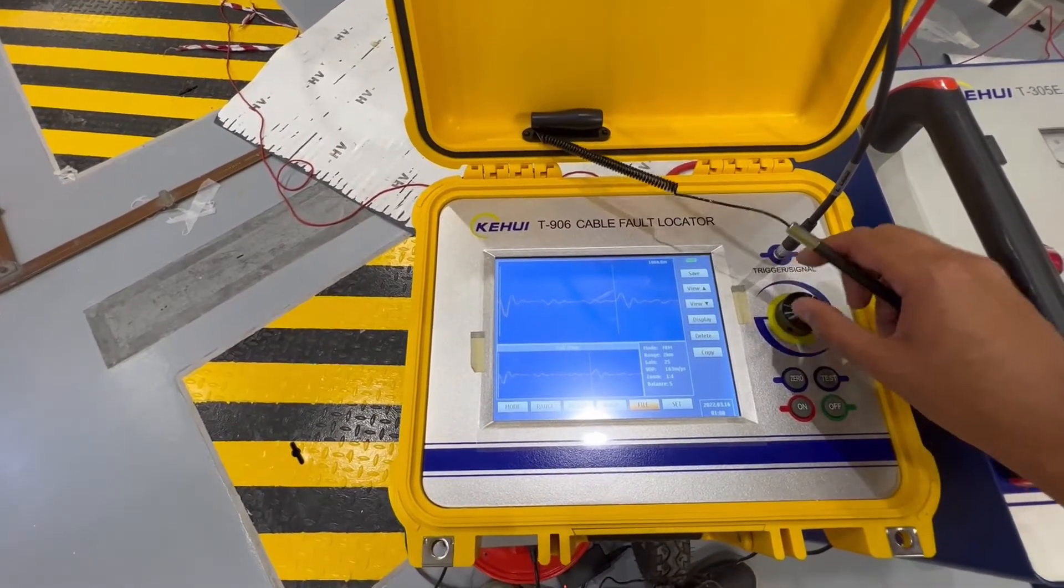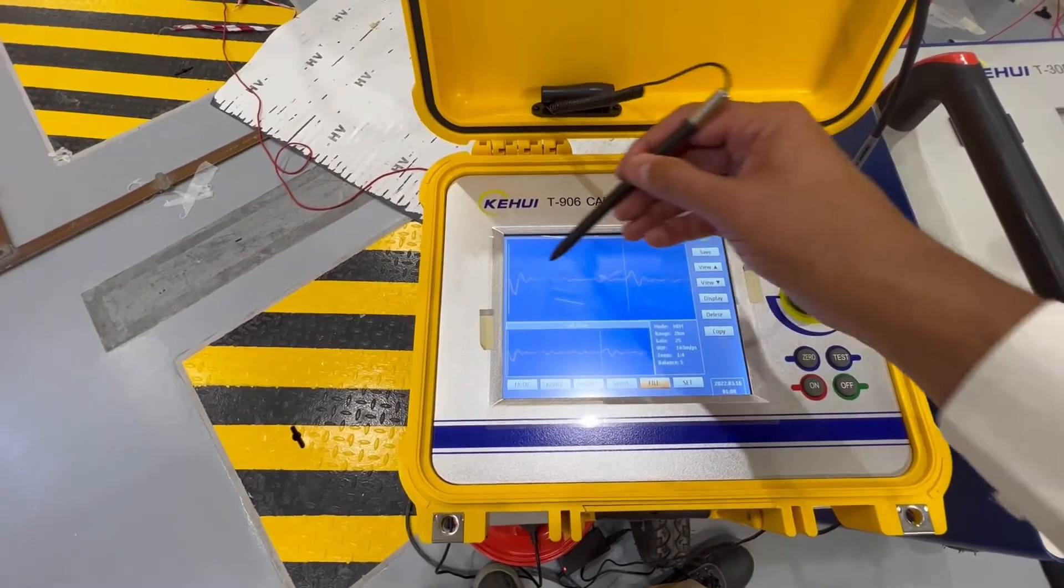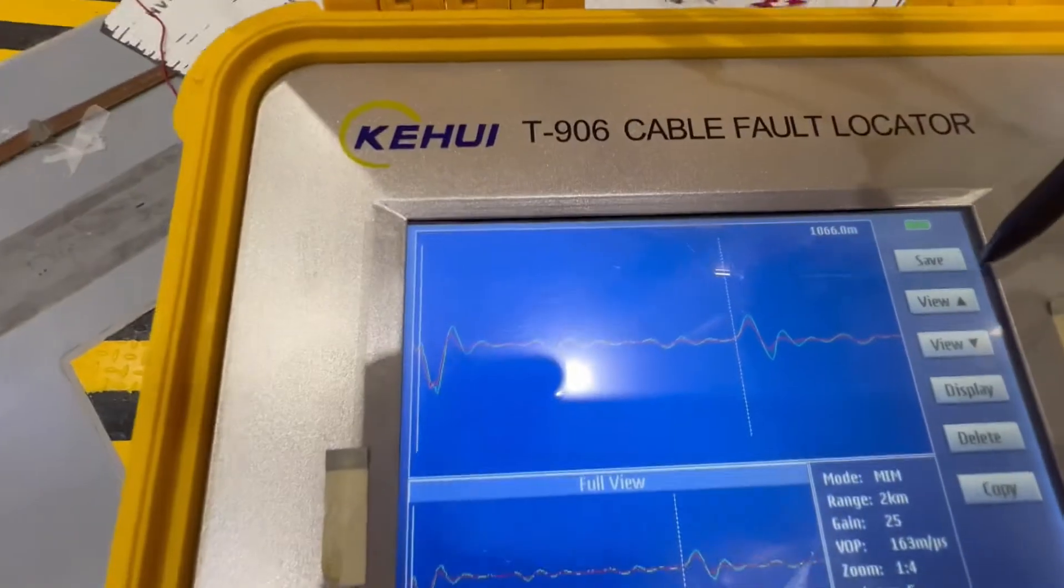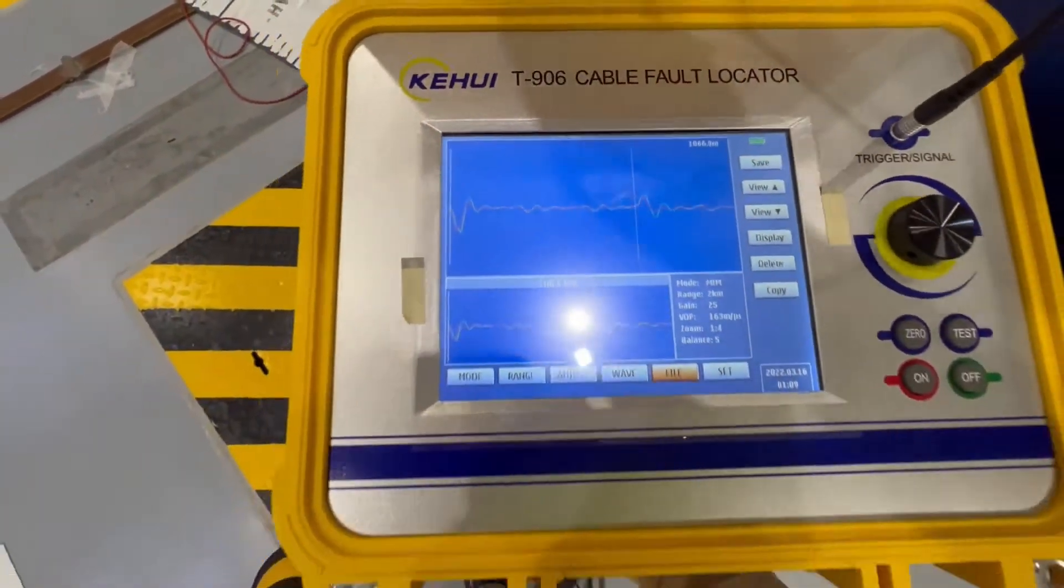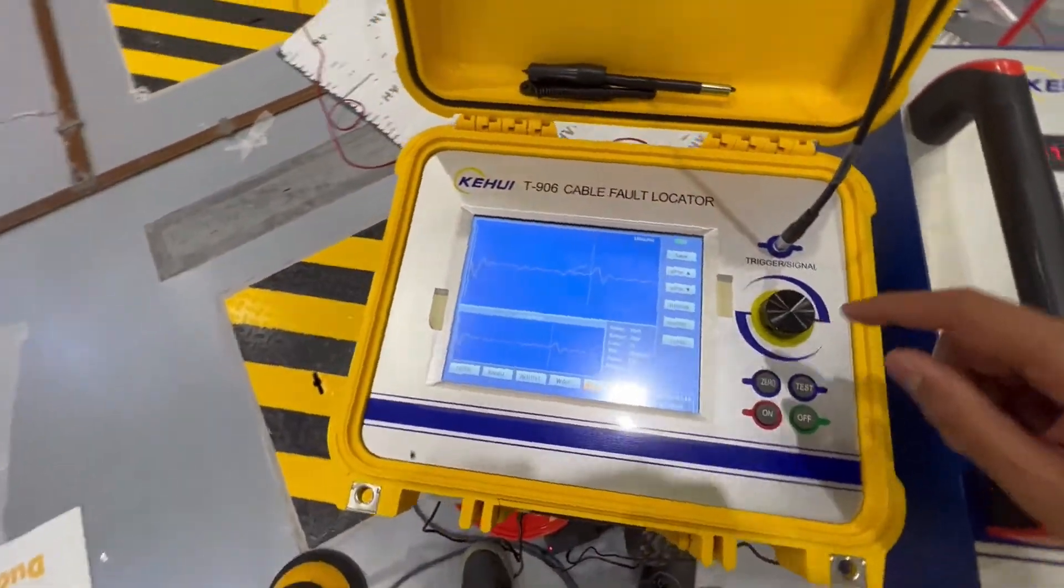You can also compare the graphs. You can see there's a red and green line which helps you to exactly pinpoint and compare the two different graphs from the healthy cable and the faulty cable.